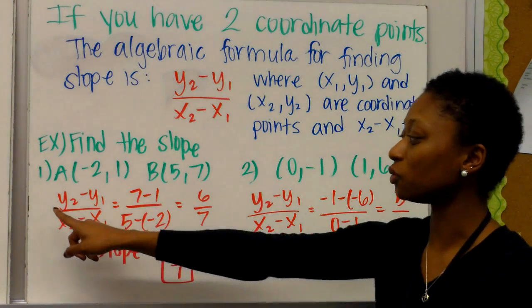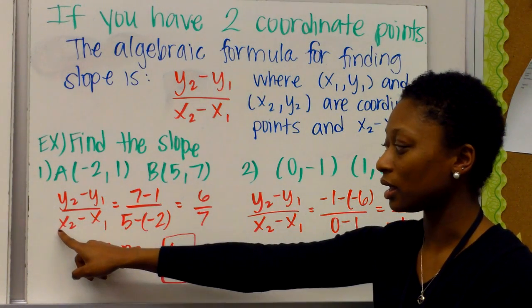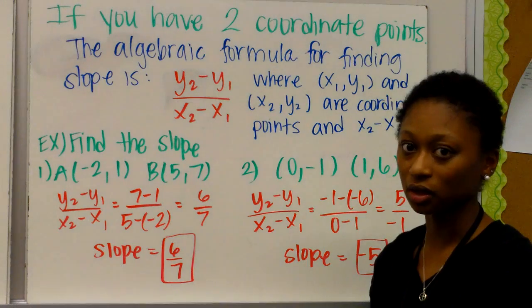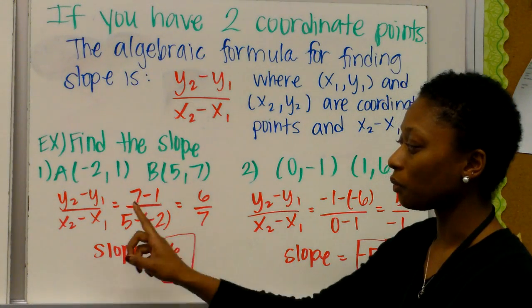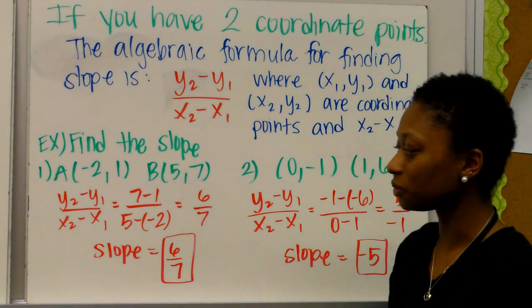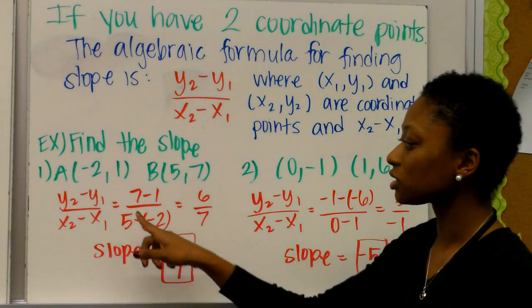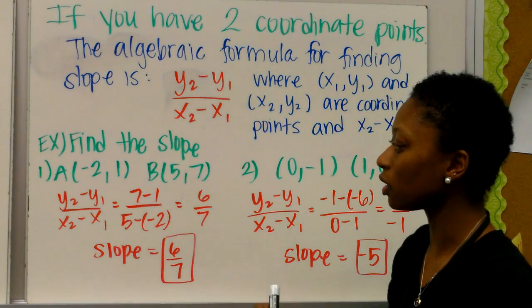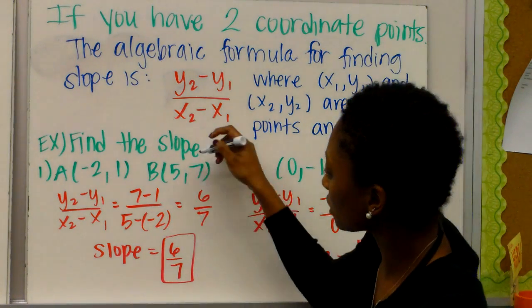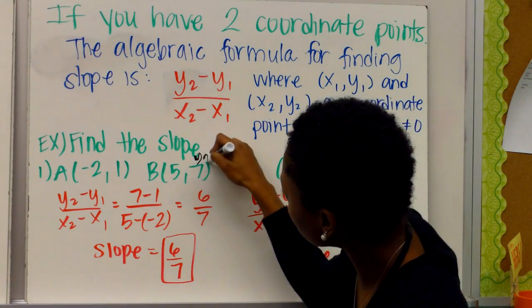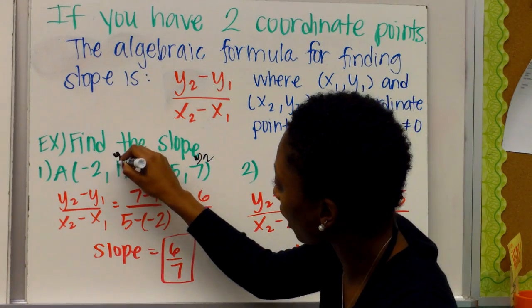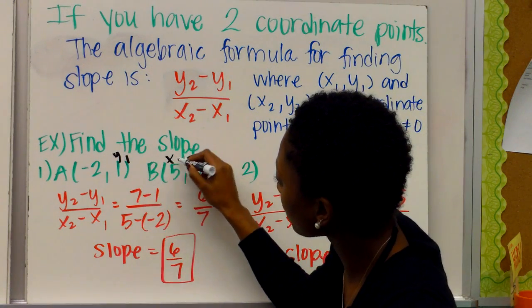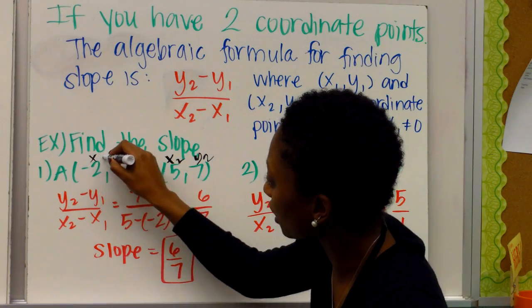Again, we're going to do y2 minus y1 and x2 minus x1. So what we need to make sure that we do is to be consistent with our points. So if we choose to do 7 minus 1, then we're saying this is y2, and this is y1,